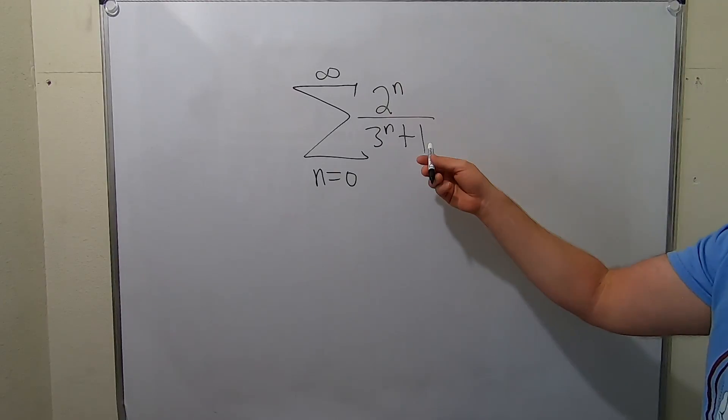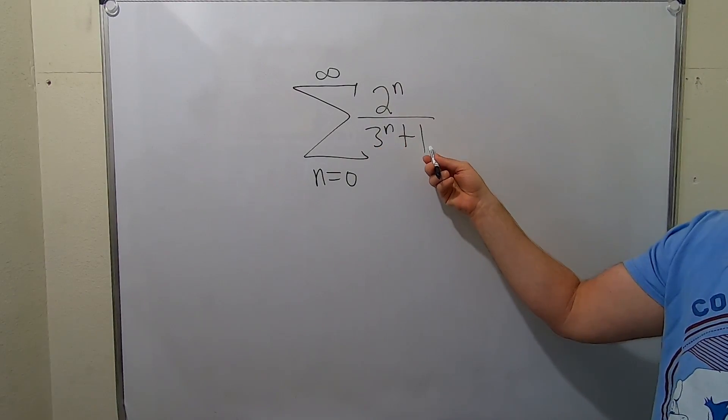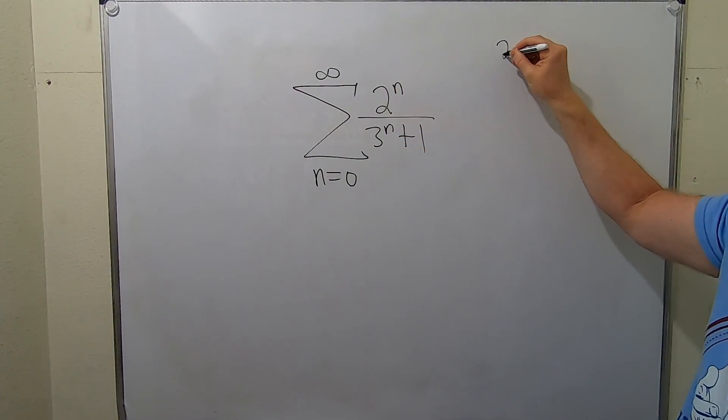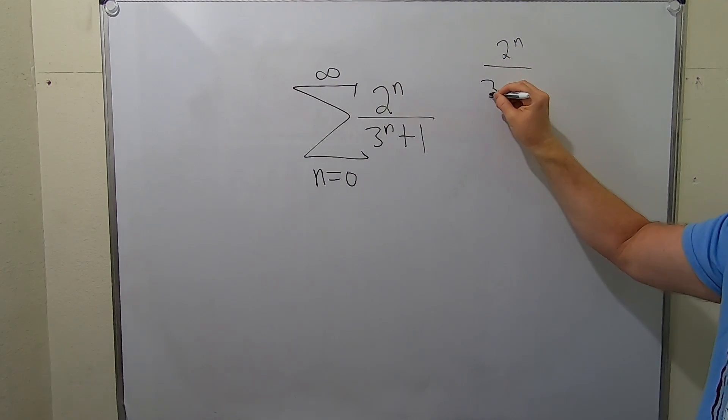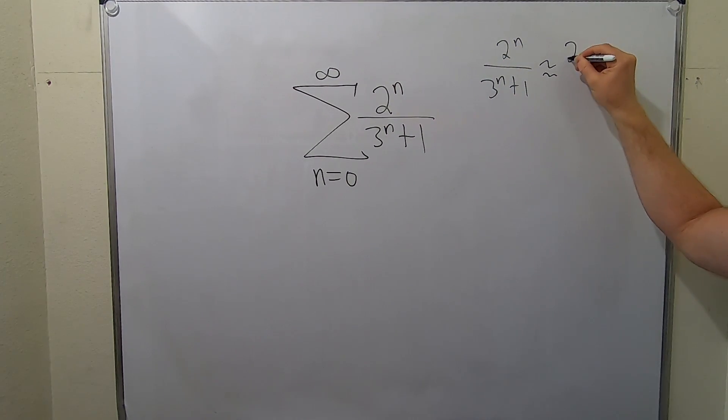So you'll notice that the 3 to the n plus 1 here, you can think about this piece as follows. You can think of this as 2 to the n over 3 to the n.